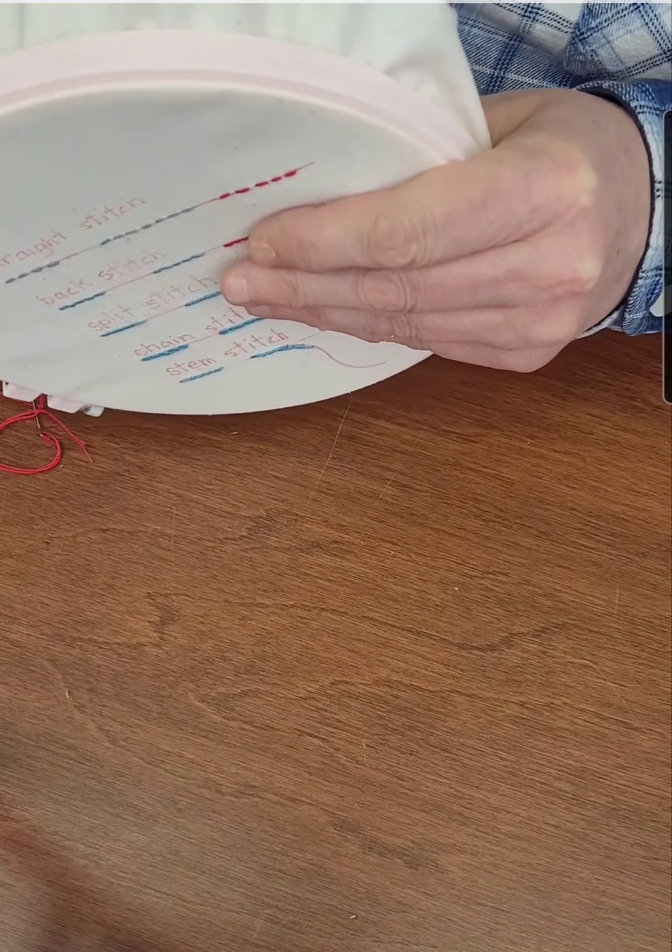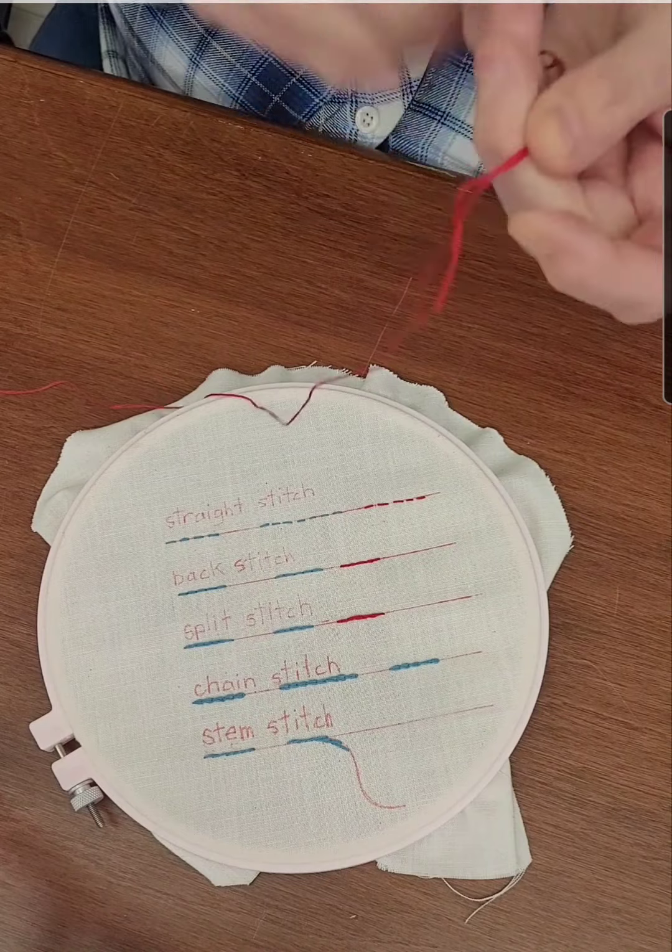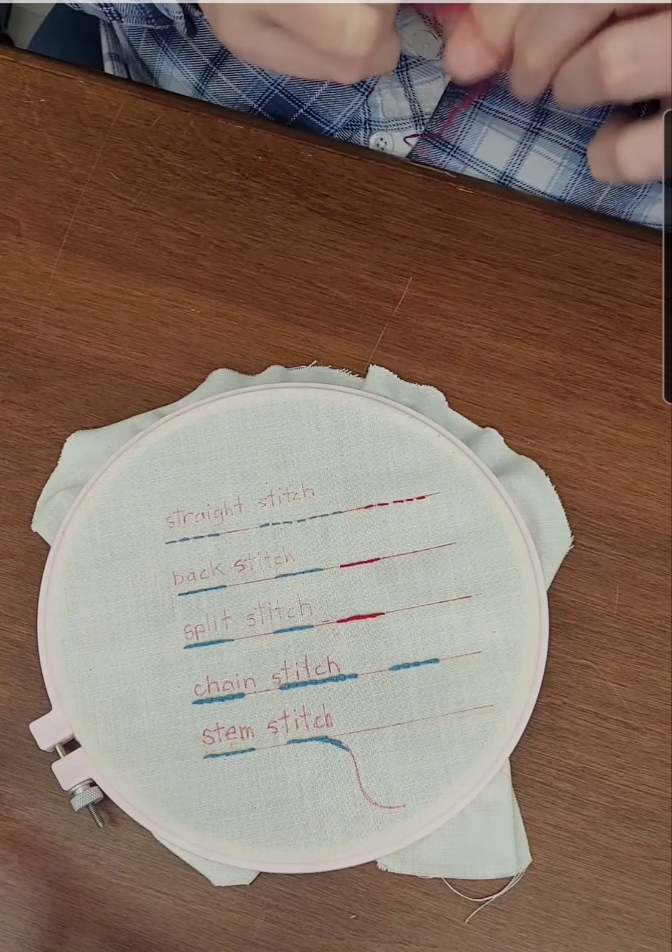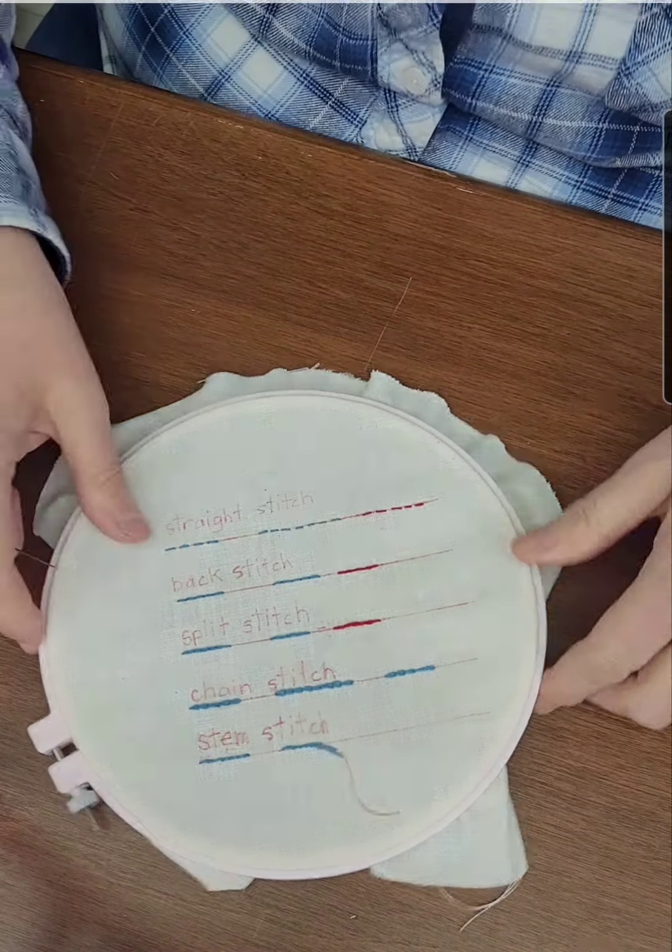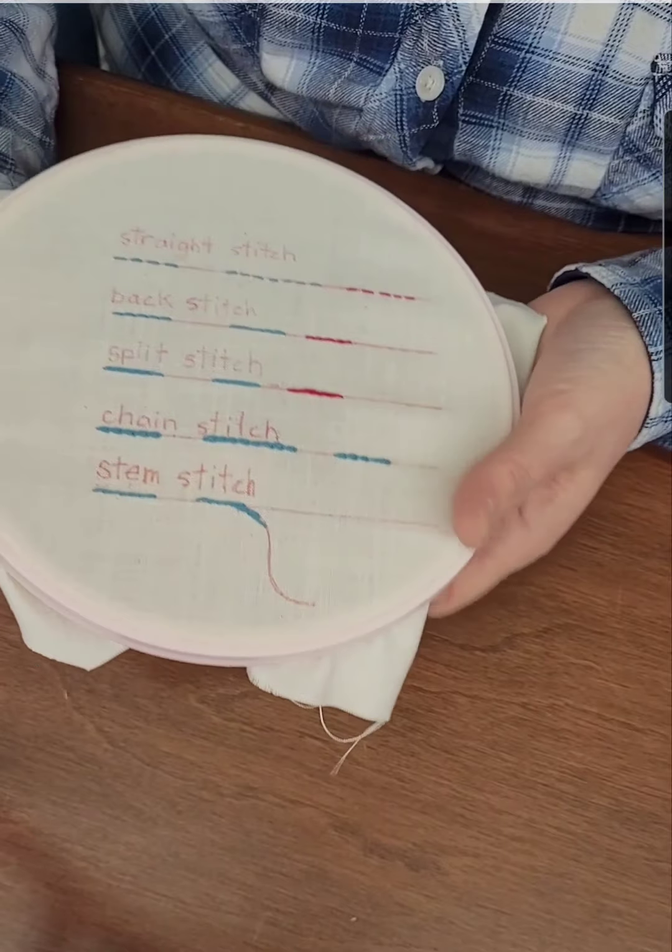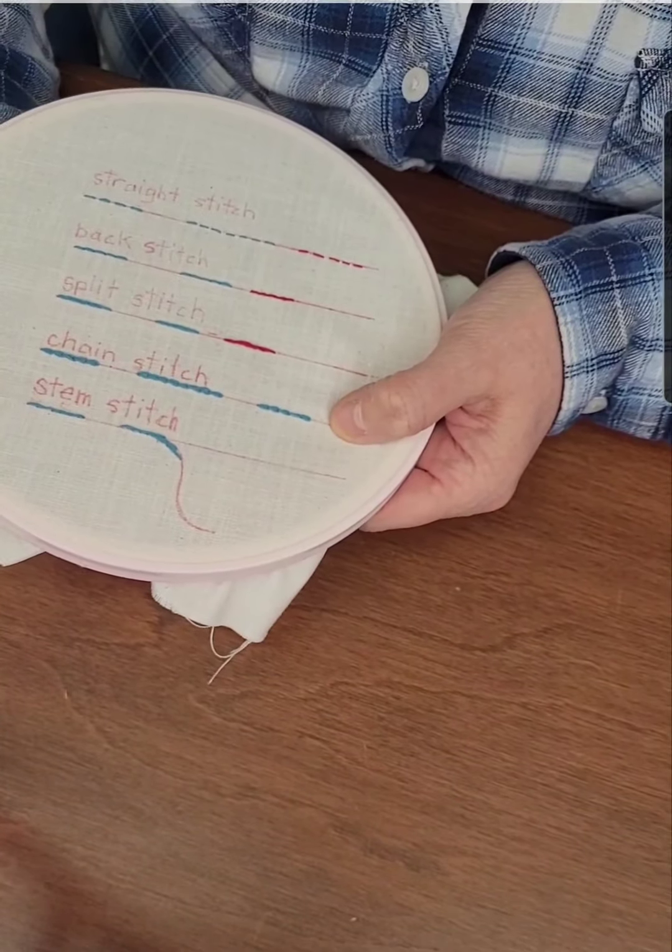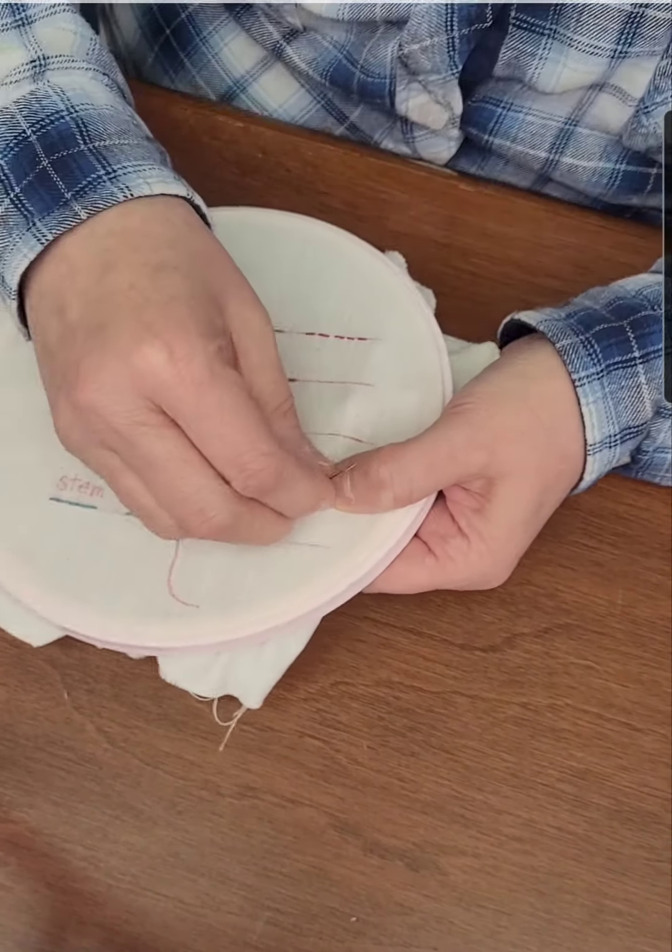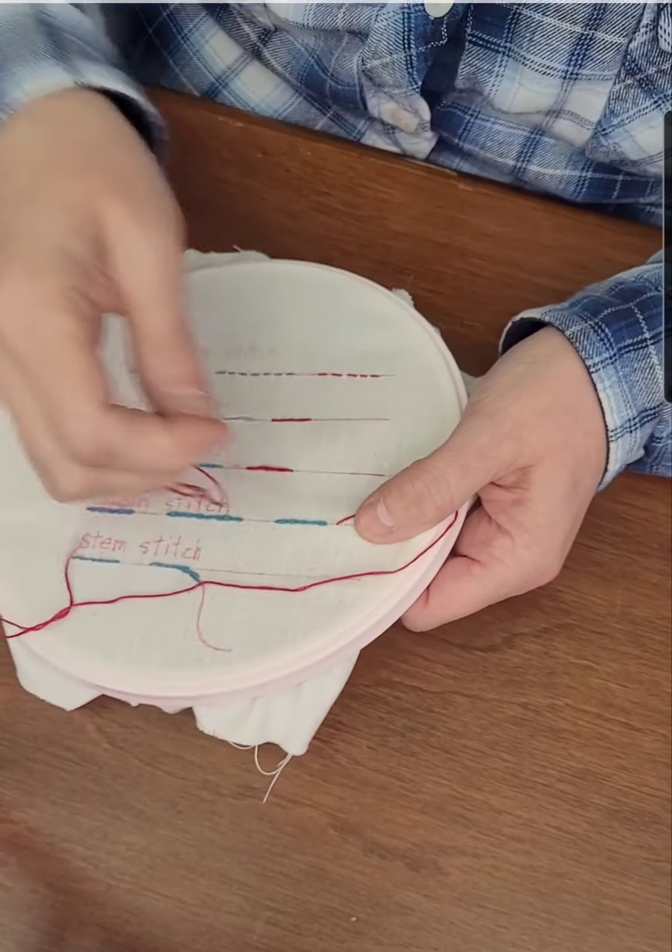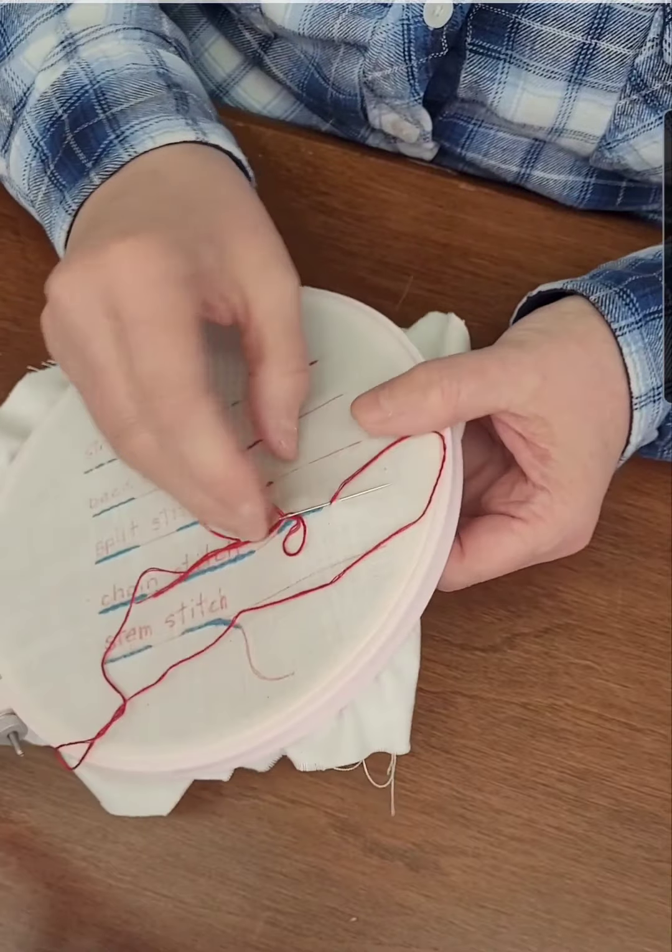So the next stitch is called the chain stitch. We're getting a little bit decorative here. So essentially you're going to be making loops and then sewing at the end of the loop. So you bring your thread up from the bottom.